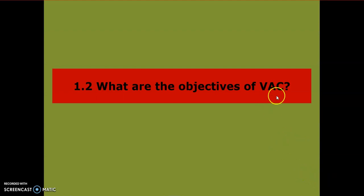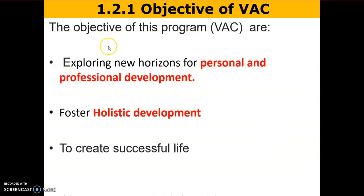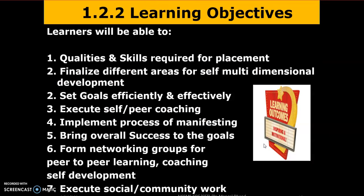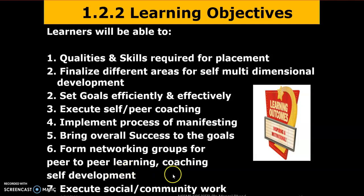The objectives of the VAC — value added course — are that Module 1 is designed for exploring new horizons for personal and professional development, faster holistic development, and creating a successful life. Learners will be able to know qualities and skills required for placement, finalize different areas for self-multidimensional development, set goals efficiently and effectively, execute self and peer coaching, implement the process of manifesting, and bring overall success to their goals. Additionally, learners will form networking groups for peer-to-peer learning, network with each other, coach each other, and learn how to become social or community leaders.